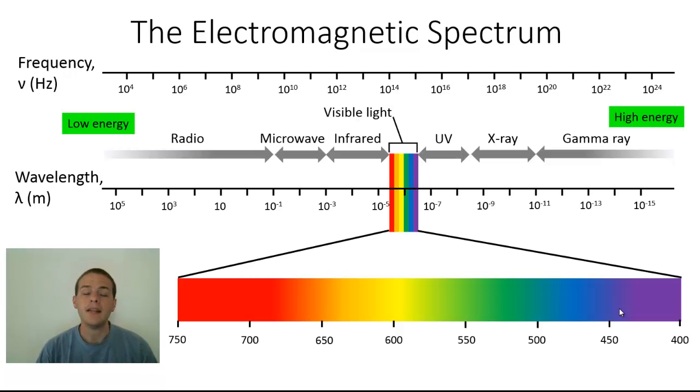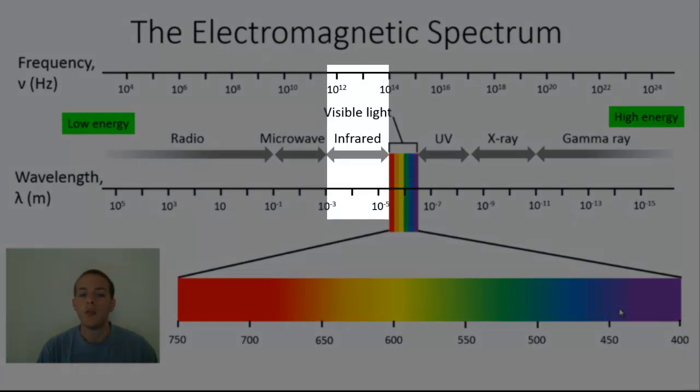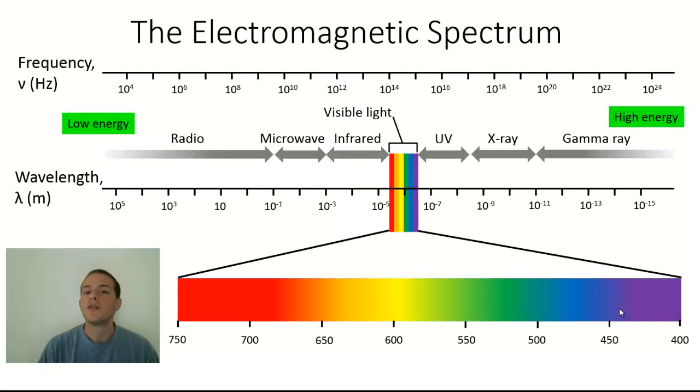After microwave we've got infrared radiation, which lies just below visible light in terms of energy and frequency. Infrared radiation is very important because it's associated with the heat that an object gives off.